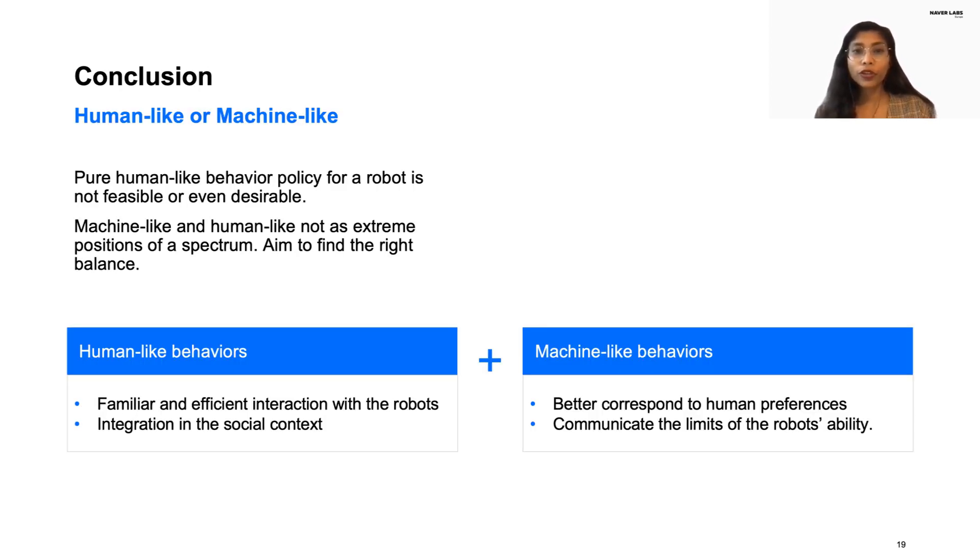We found that a pure human-like behavior policy for a robot is not feasible as described in our ethnographic observations, and not even desirable as highlighted by the body-storming and the survey results, especially in this context where the aim is to create a non-experience for routine activity. We also do not characterize machine-like and human-like as two extreme positions of a spectrum.